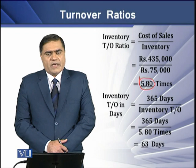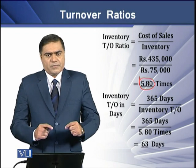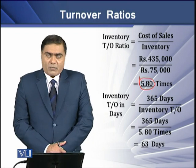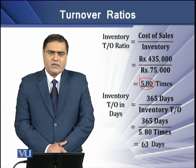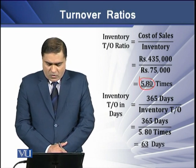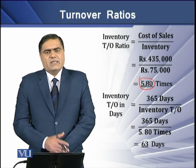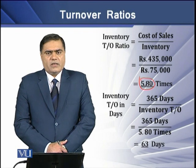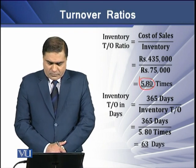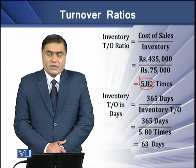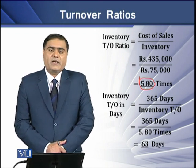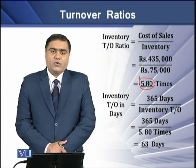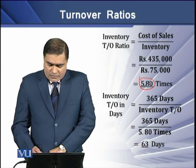Inventory turnover in days tells us how many days a firm takes in order to replace its inventory in the godown. The formula is 365 days in a year over the inventory turnover ratio, or working days in a year can be used in place of 365 days. In this example, we have 365 days and 5.8 times as the inventory turnover ratio. Dividing 365 by 5.8, we get an answer of 63.